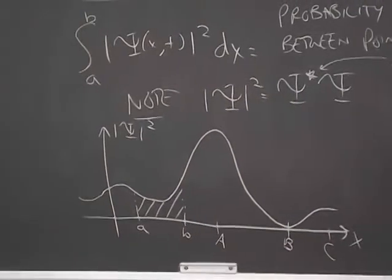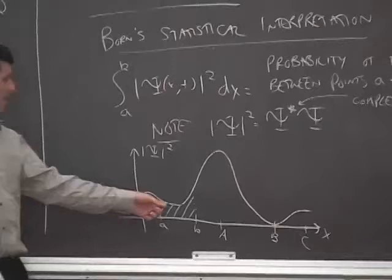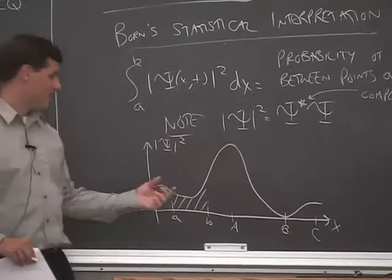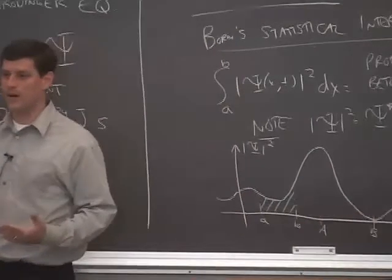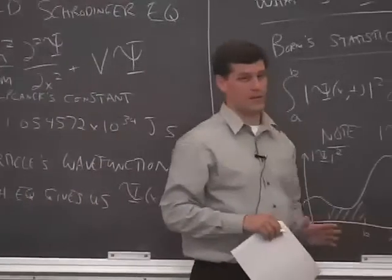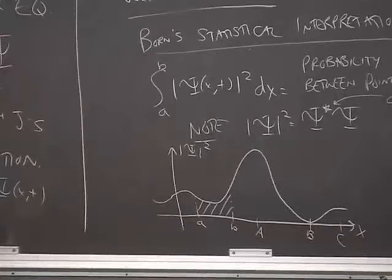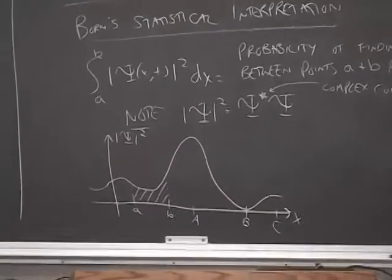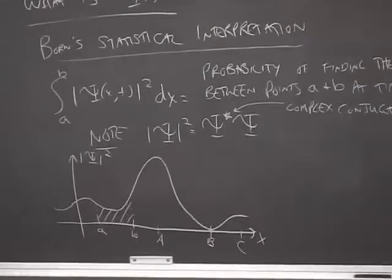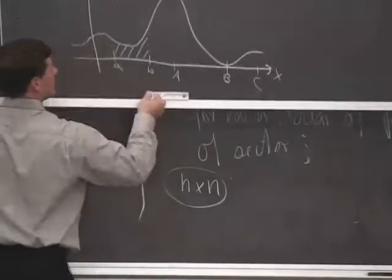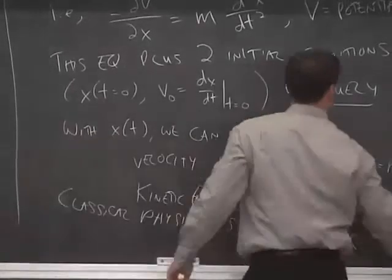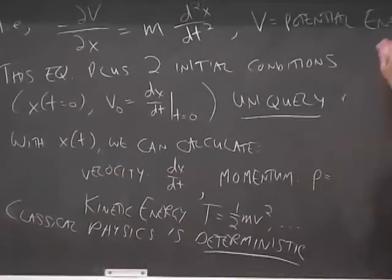We could label some other critical points. For example, this peak here, we'll call that A. We'll call this point here B, capital B, and this point capital C. Obviously, just looking at this, eyeballing it, we can see that the probability of locating the particle near A would be relatively high because there's a peak in the magnitude squared of the wave function. The probability of locating the particle near point B would be relatively small because the wave function in magnitude squared is approximately zero. C would be somewhere in between. So just by eyeballing the wave function, or at least the magnitude squared of the wave function, we can know something about where the particle is likely to be found. Any questions so far?